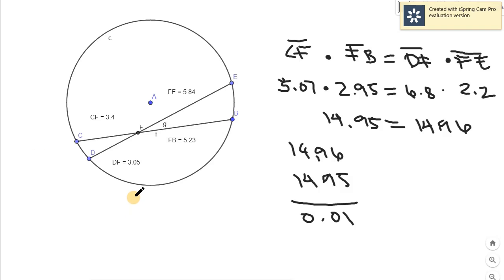Let's have 3.4 times 5.23, the answer is 17.78. It should be the same as 3.05 times 5.84, and the answer would be 17.81. Let's get the difference between them. 17.81 minus 17.78, it's just simply 0.03. The difference is 0.03.